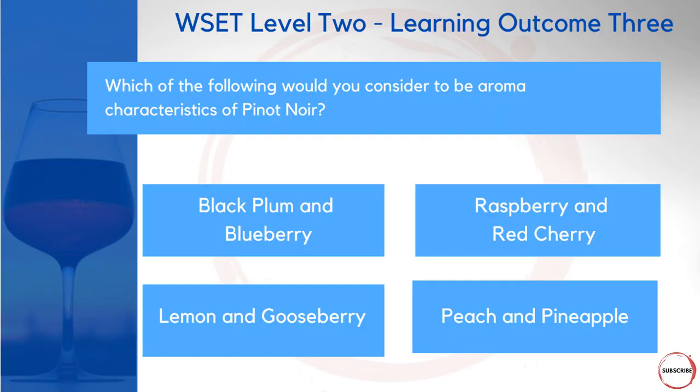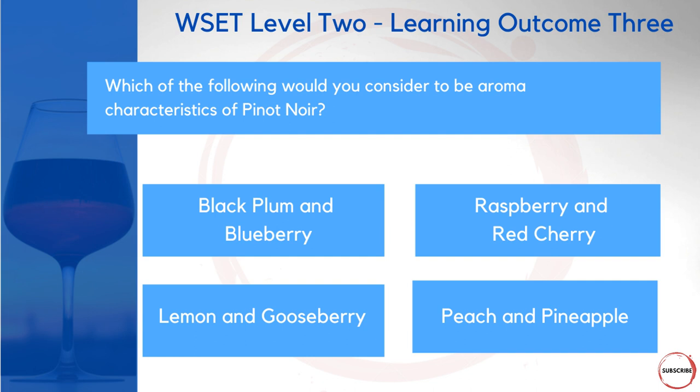Let's look at some example questions. Which of the following would you consider to be aroma characteristics of Pinot Noir? Would it be black plum and blueberry, raspberry and red cherry, lemon and gooseberry, or peach and pineapple? Two of the answers are associated with white grapes and two with black grapes, so you can discount some immediately. You'll learn that raspberry and red cherry are considered aroma characteristics of Pinot Noir.